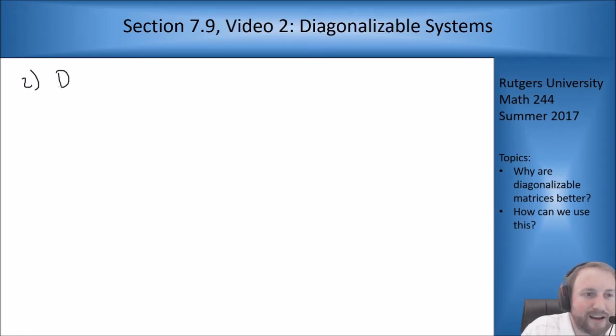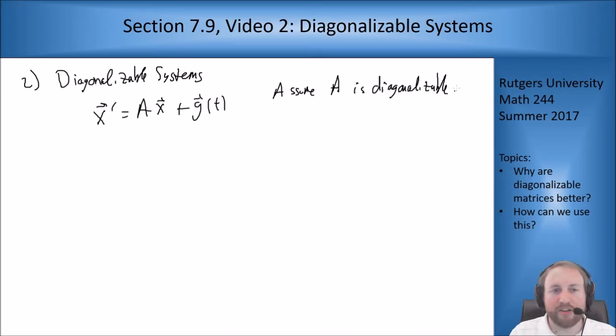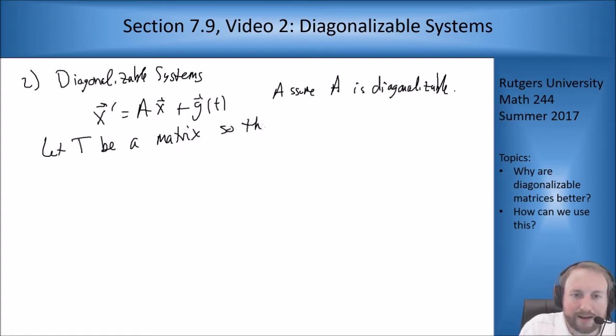So part two of this is diagonalizable systems. We're looking to solve the general problem x prime equals Ax plus some vector g of t, and we're going to assume A is diagonalizable. So we want to use the fact that it's diagonalizable to make this easier to solve the system. What I'm going to do is say let T be a matrix so that T inverse A T is diagonal. We've seen this trick before where if it's diagonalizable I can pick a matrix to make that happen. How do I do that? I get T from the eigenvectors of A.